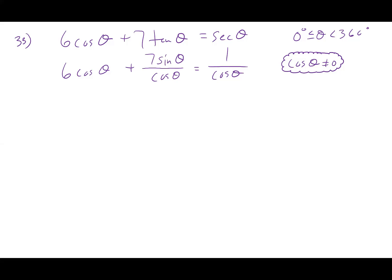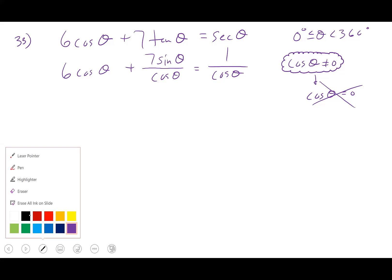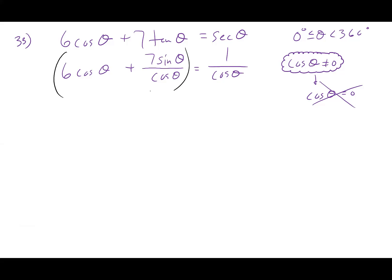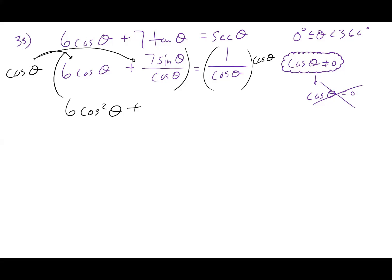As I do this process, if I find that cosine theta equals zero, I'm going to cross that out — it makes no sense for our problem. If cosine were equal to zero, you'd technically be dividing by zero, or you could say tangent is undefined. So this would make things undefined. Now let's multiply both sides by cosine theta. That gives me six cosine squared theta; the cosines cancel on the seven sine over cosine term, leaving just seven sine theta; and the cosines cancel on the right, leaving just one.